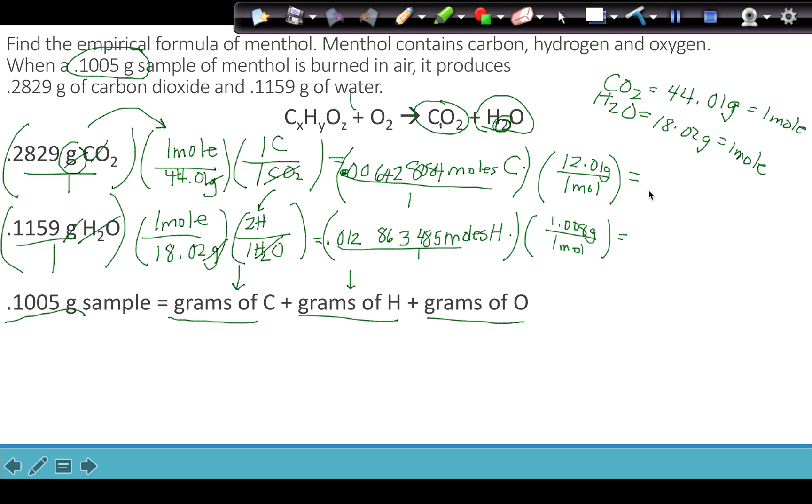And what I wind up with for my grams of carbon is 0.077201288 grams of carbon. And for the hydrogen, I wind up with 0.012966392 grams of H. You should be doing this math with me.